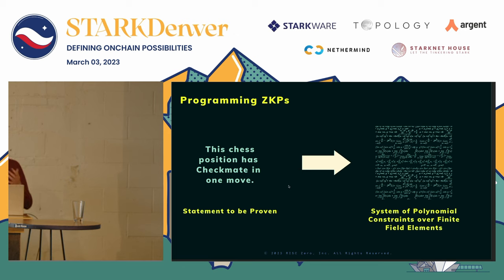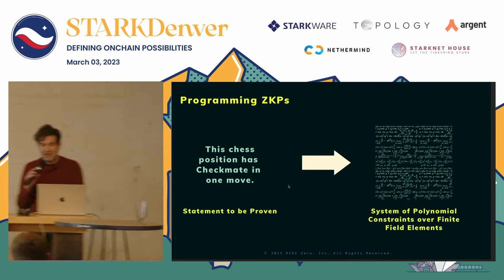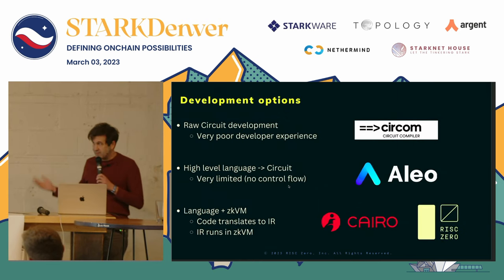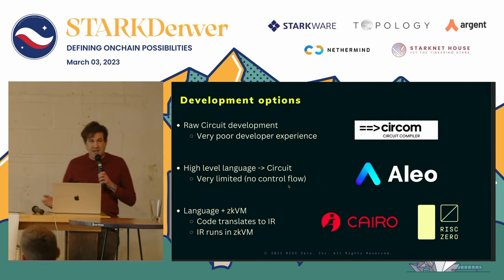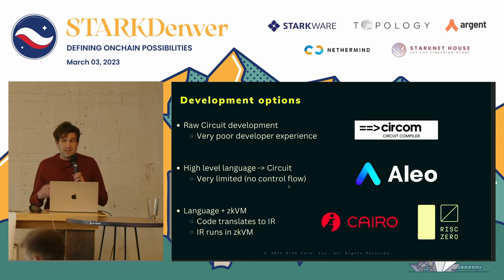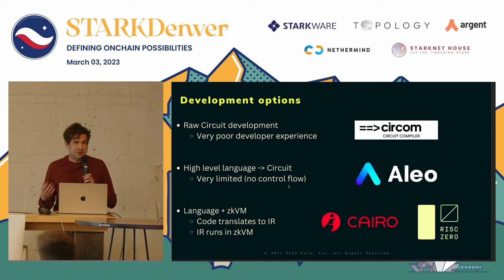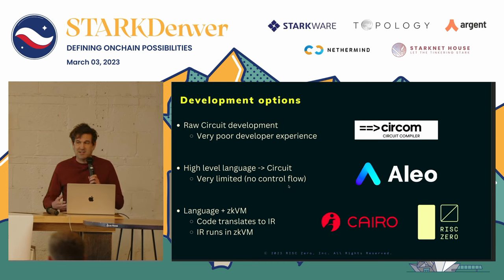So if you want to encode something like a chess position that has a checkmate in one move, and you want to encode it into a zero-knowledge proof, how do you do that? There are a couple of different development options in the ZKP industry. Some people actually go and write the raw, low-level circuits that contain these polynomial constraints.